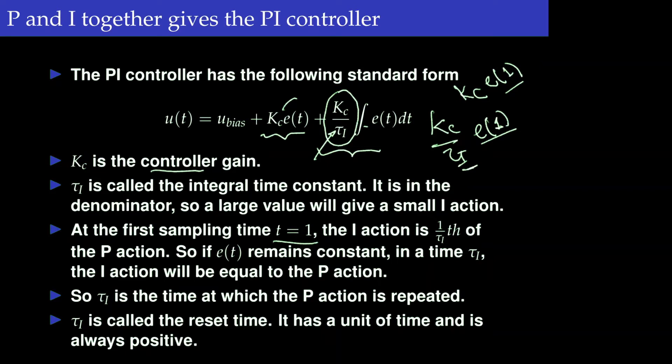This gives rise to tau_i being called the reset time — meaning that after every time interval tau_i, the integral action repeats the proportional action. It is also called the repeat time or the integral time constant.